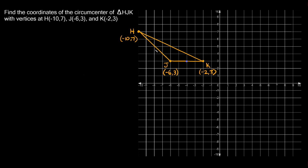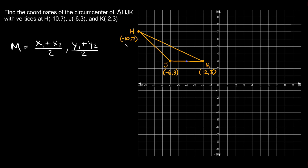Now let's find another midpoint. We can use this side or this side — let's use this one. This side is obviously at an angle, not perfectly horizontal or vertical, so it's not going to be as easy to find. In order to find the midpoint of this side, we just need to use the midpoint formula: x₁ + x₂ over 2, and y₁ + y₂ over 2. The first thing is to label our two points — H as (x₁, y₁) and J as (x₂, y₂).